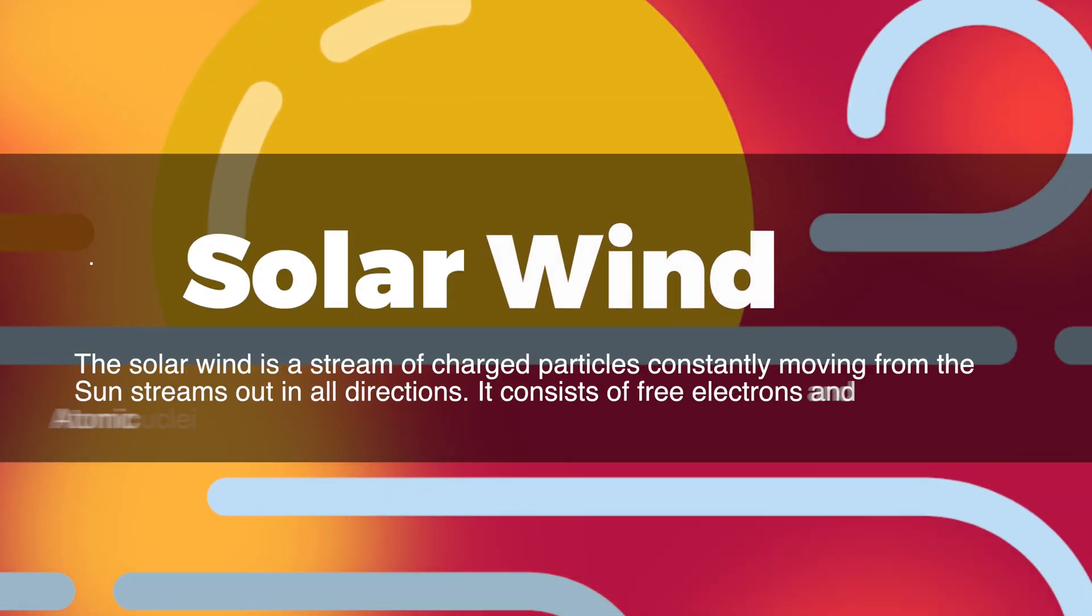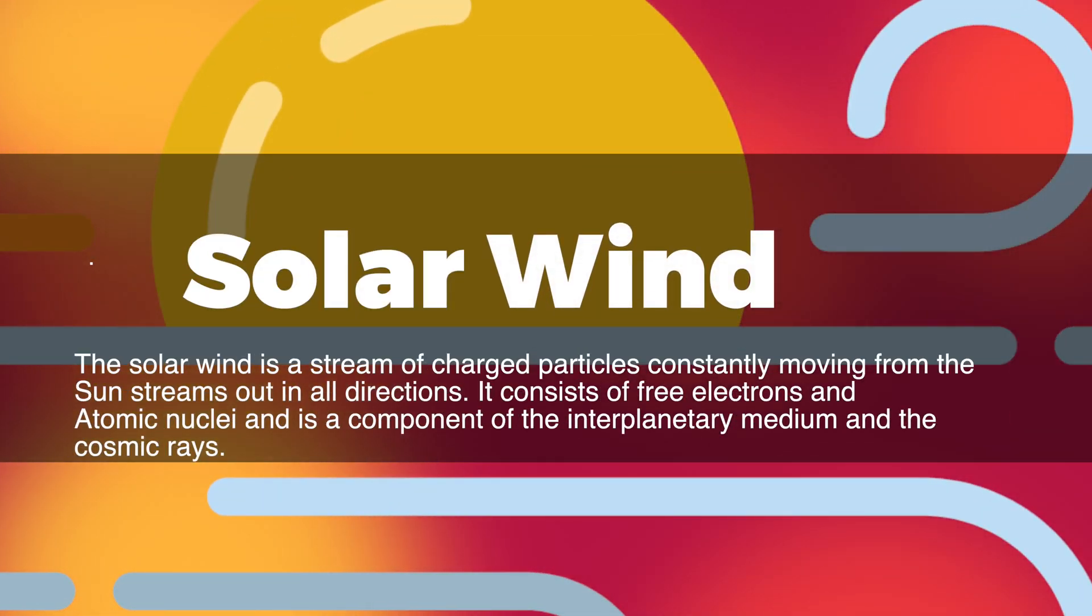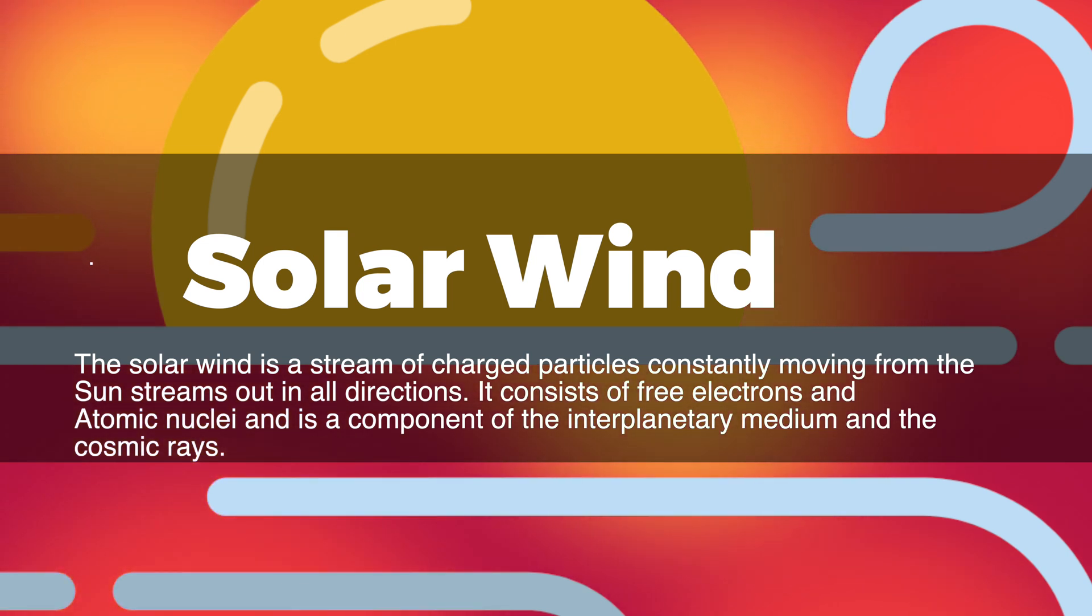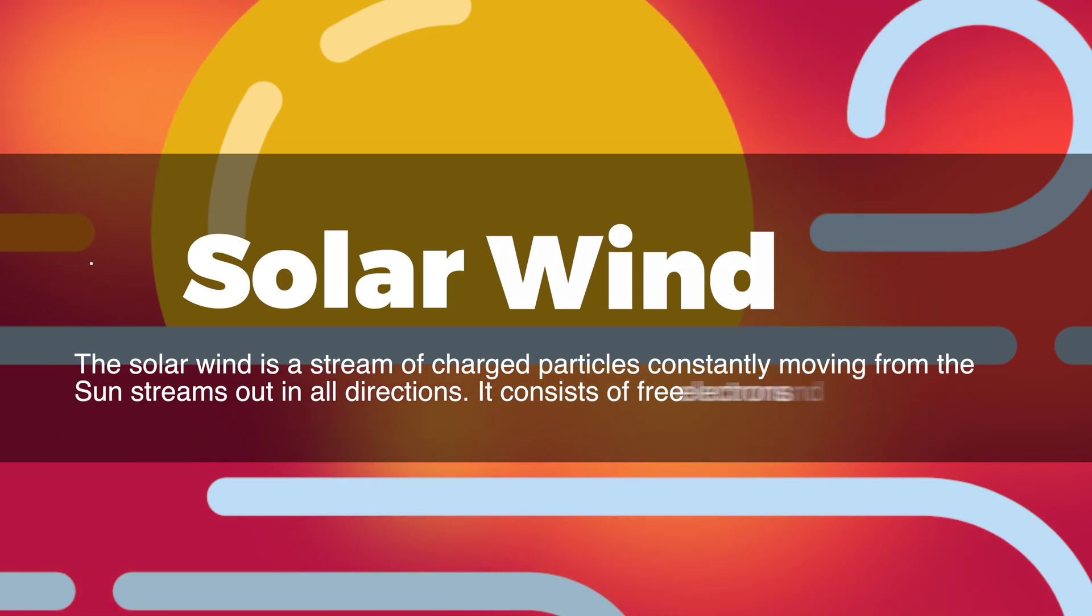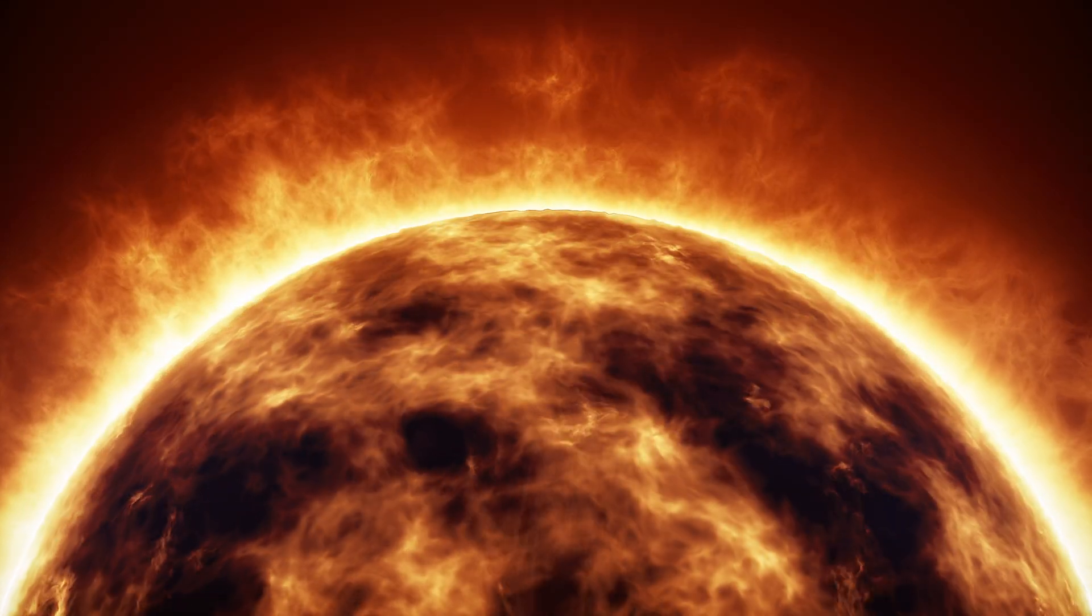The solar wind is a stream of charged particles continuously flowing away from the Sun in all directions. It consists of free electrons and atomic nuclei and is a component of the interplanetary medium and cosmic radiation. The speed of the solar wind varies depending on solar activity and can affect Earth.